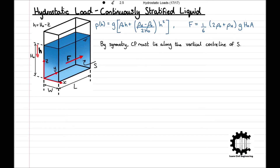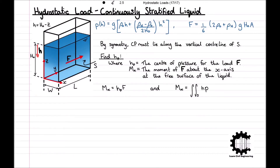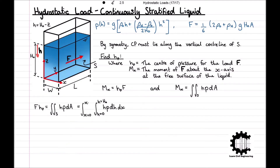To calculate the depth of cp below the free surface in terms of h, we use moments about the free surface. With h_p denoting the centre of pressure depth and M_x the moment of F about the x-axis at the free surface, we have M_x = h_p·F. Using the hydrostatic pressure distribution, M_x = ∬_S h·p dA, so that F·h_p = ∬_S h·p dA, evaluated as a double integral over x from 0 to W and h from 0 to h_0.